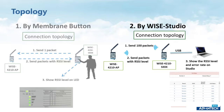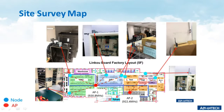Side survey is very important and useful to help customers understand the signal strength in the environment by checking the SSI level between AP and nodes. Here is an example of a real side survey application in our link code factory. We can see that the red point is the AP and the blue points are the nodes. By doing the side survey, we can quickly understand the wireless environment in each area.